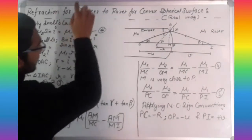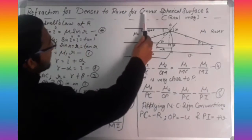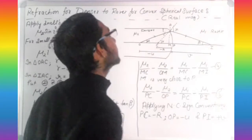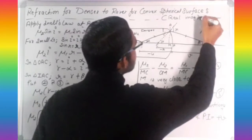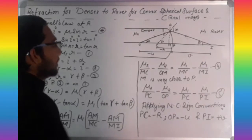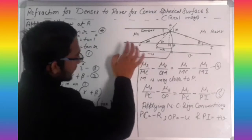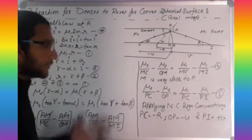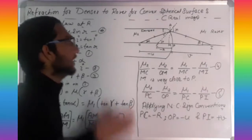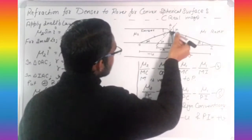Previously we covered refraction from denser to rarer. For a concave surface we understand the basics — when going from denser to rarer, we draw the diagram with the object placed on the left-hand side. The medium in which the object is placed is kept on the left side, and the ray of light comes from there.